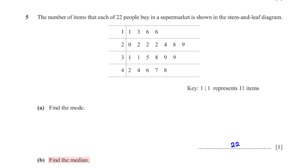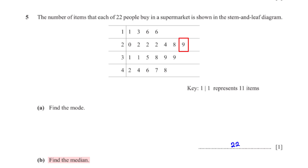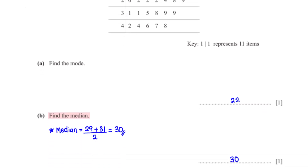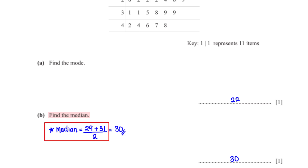Find the median. The stem and leaf plot is already arranged in ascending order, so to get the location of the median, we find half of n plus 1, where n in this case is 22. This gives us 11.5. This means the median is located between the 11th number and the 12th number. The 11th number is 29 and the 12th number is 31. And so the median will be 29 plus 31 divided by 2, which is equal to 30.